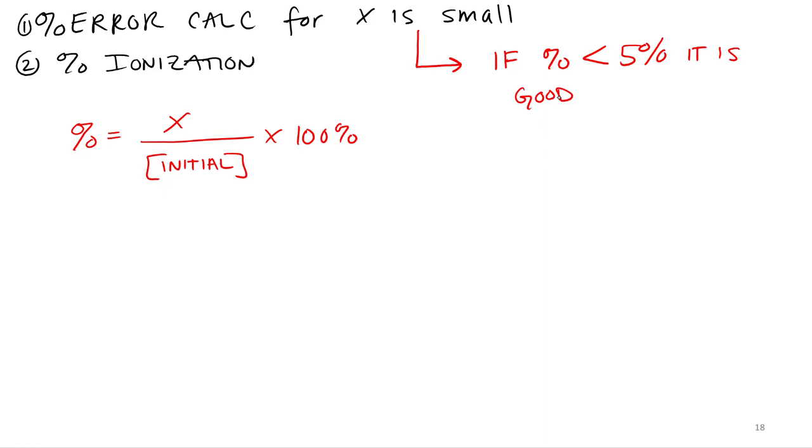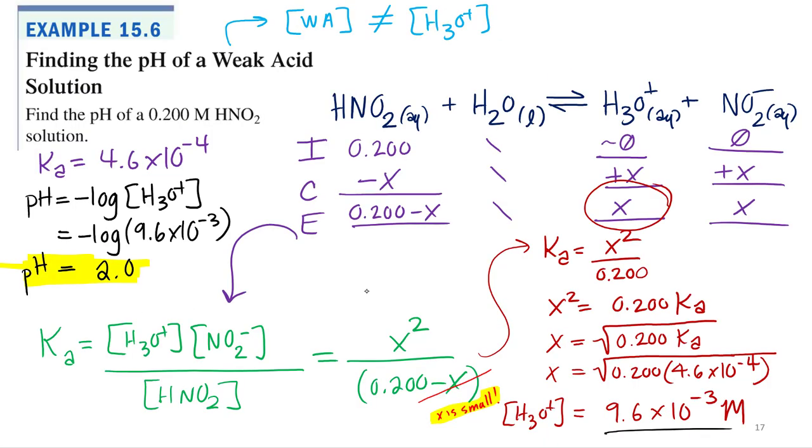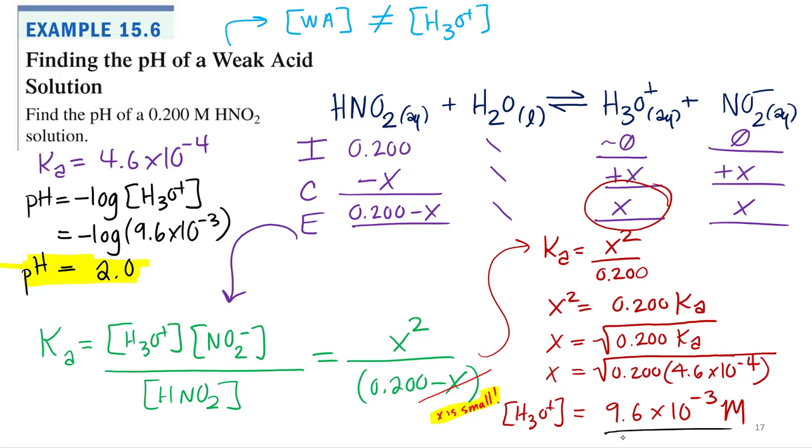Okay, so let's check this one to see if we did a good approximation, or we can use that x is small. So our x was 9.6 times 10 to the negative third, and our initial concentration was 0.2. So let's do this.